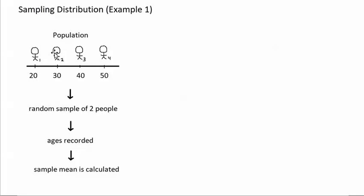We're imagining that a certain person is interested in what the mean age of this population equals. But for some reason, the person doesn't have enough time to ask all four people for their ages. So the person randomly selects a sample of two people from the population, records their two ages, and calculates the mean of the two ages to estimate the mean age of all four people. The person calculates a sample mean to estimate a population mean.